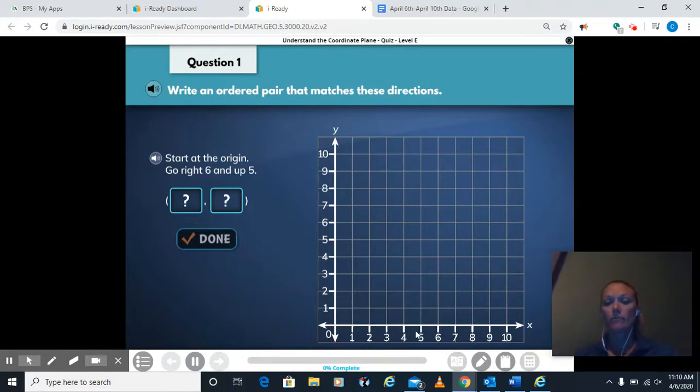1, 2, 3, 4, 5, 6, and up 5. 1, 2, 3, 4, 5. So my ordered pair would be 6. We went over 6. 5. We went up 5.